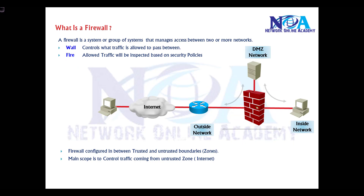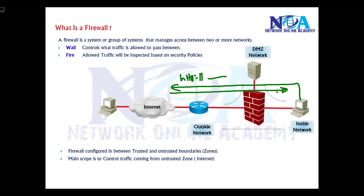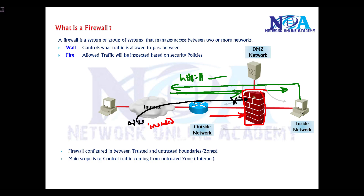All traffic is inspected. For example, a user in the LAN sends a request to an HTTP server — like Google or Yahoo — and the return traffic should come back. But if an attacker tries to initiate traffic, it should be denied. There are two types of traffic coming from the outside: one initiated by the attacker, and the other is return traffic. The firewall must have the capability to inspect which traffic is return traffic and which is attacker-initiated, based on security policies.